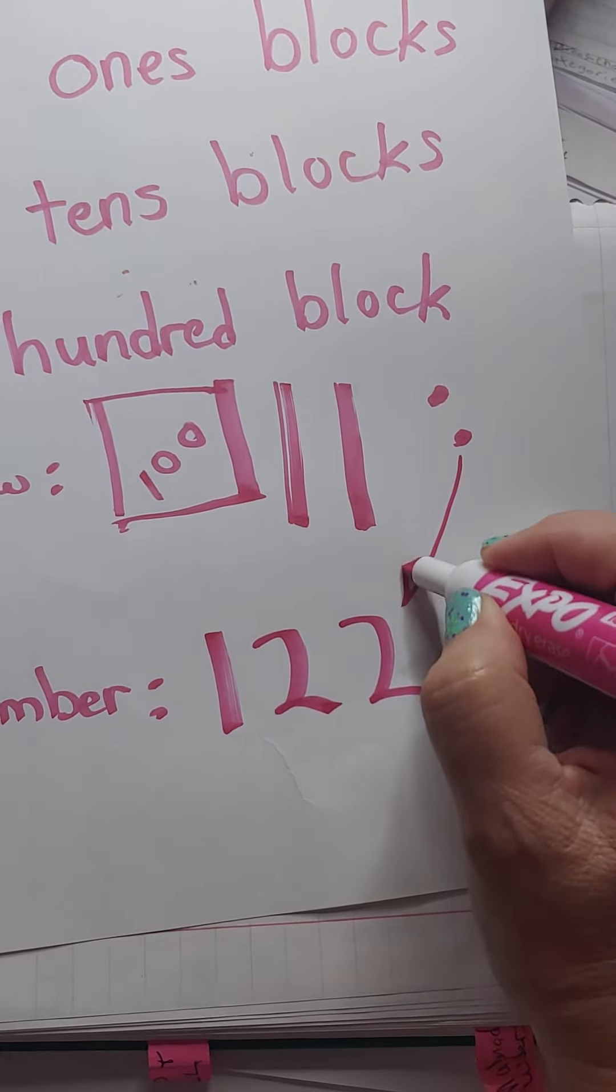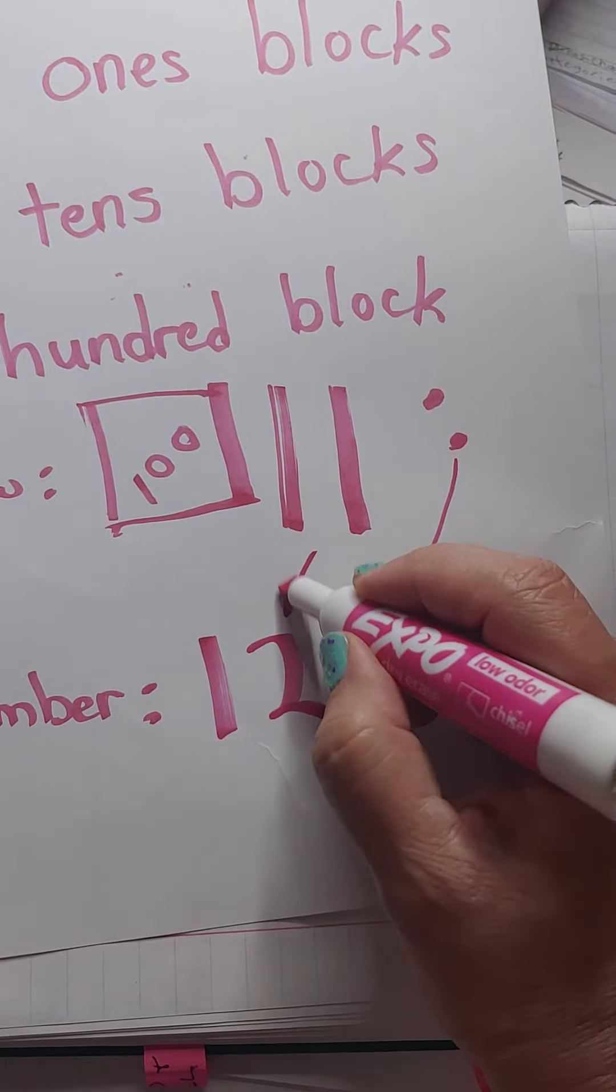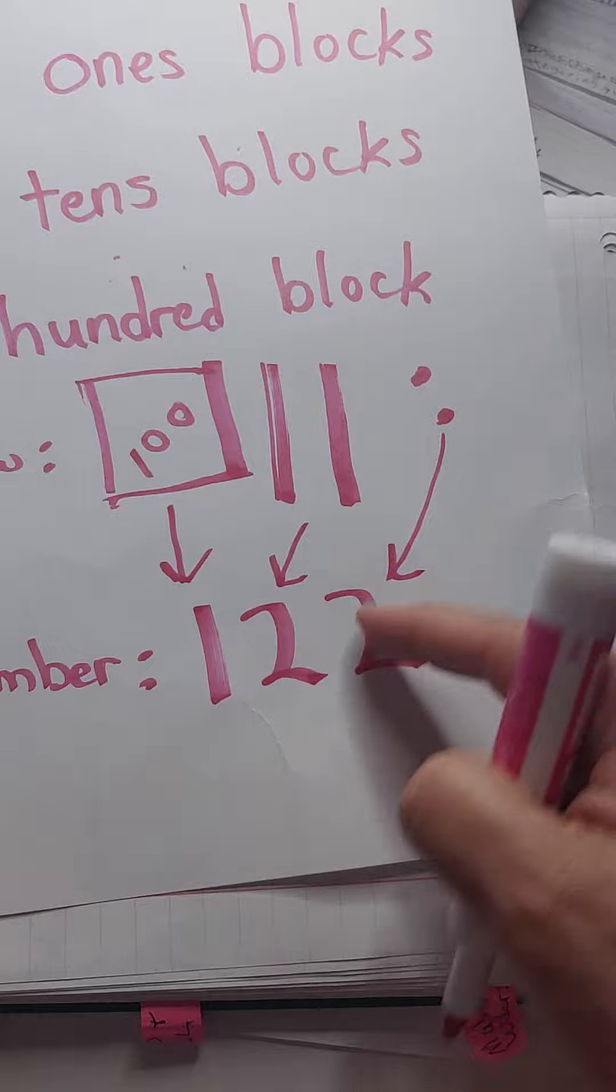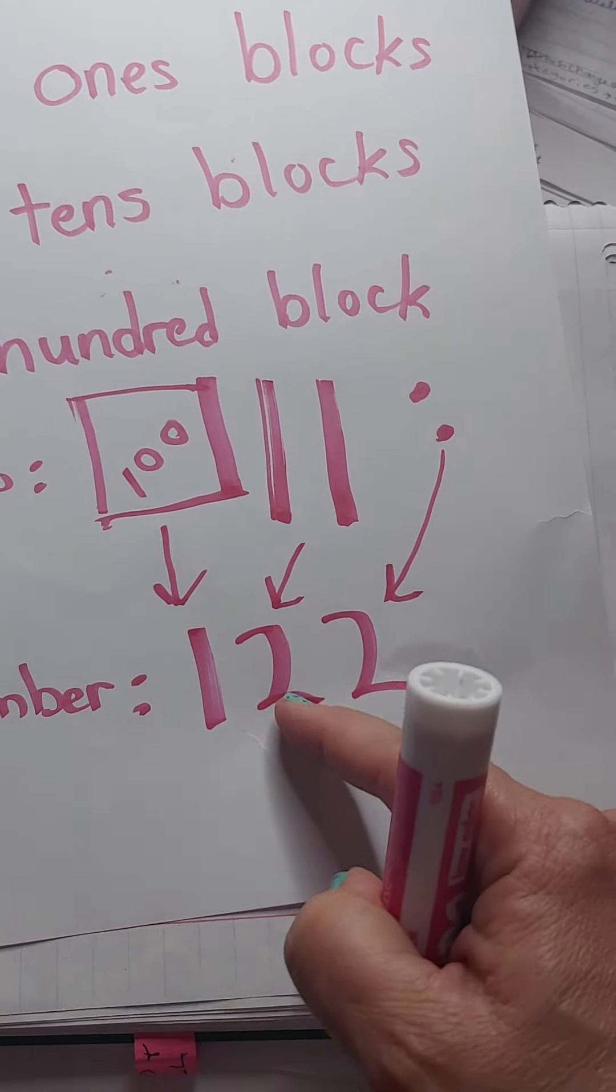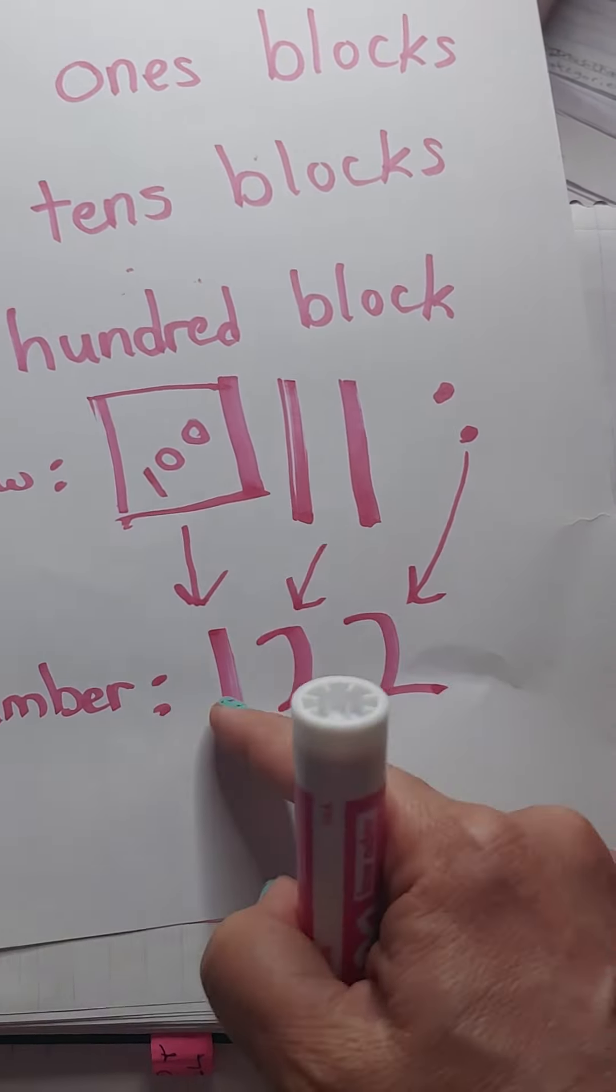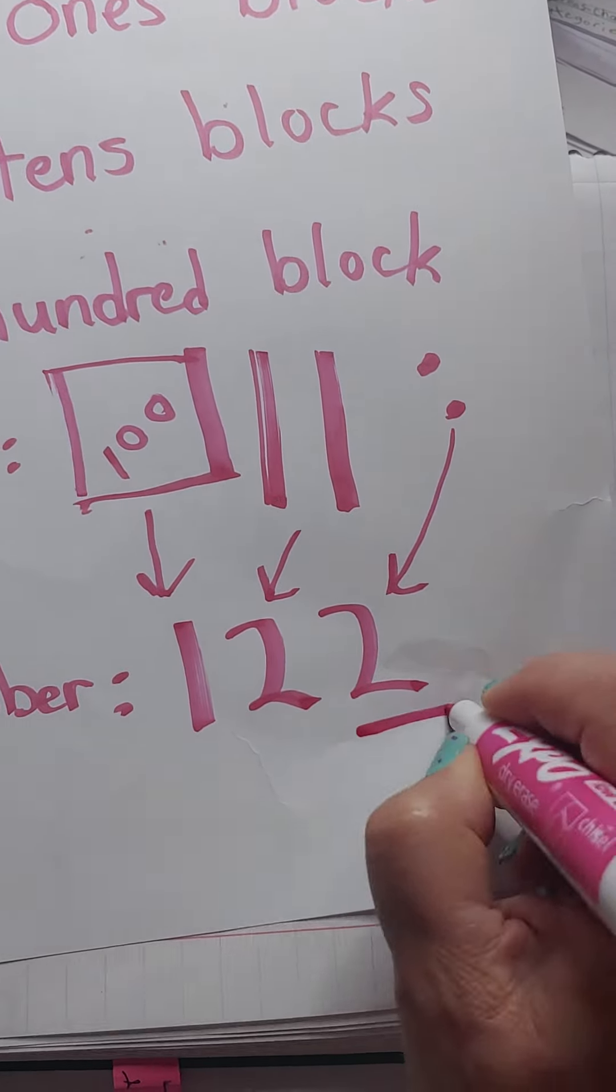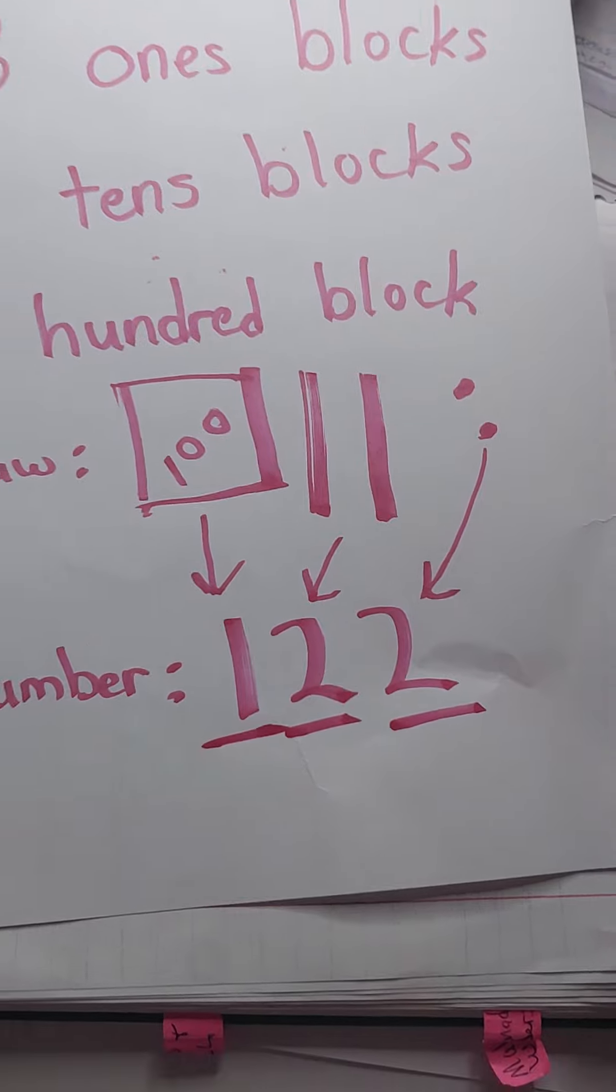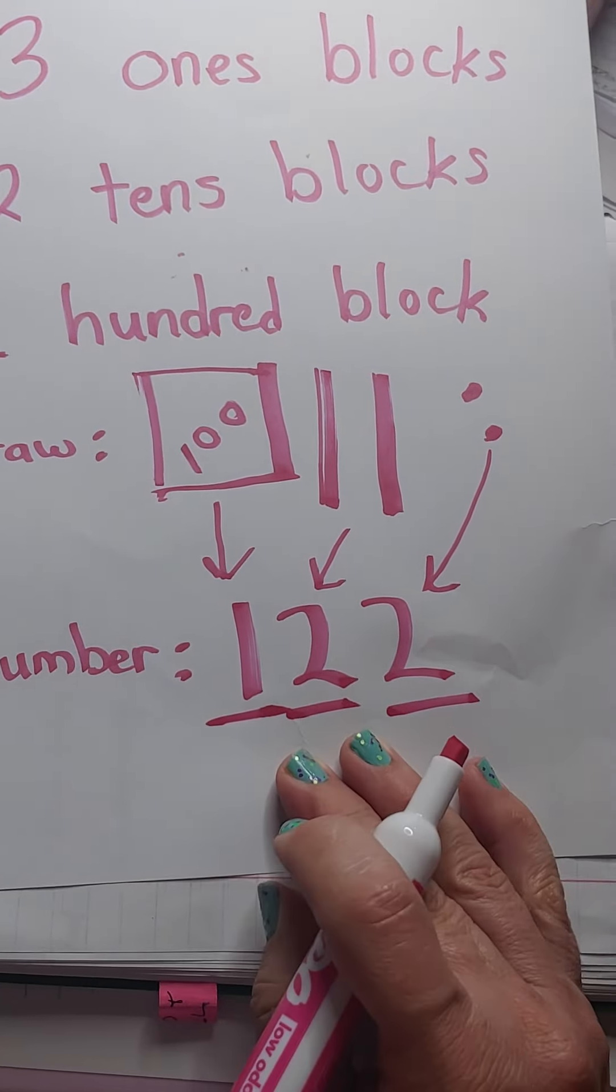See? There's two ones. There's two tens. And there's one hundred. Two ones. Two groups of ten. And one group of a hundred. One's place. Ten's place. Hundred's place. It's all about place value, boys and girls.